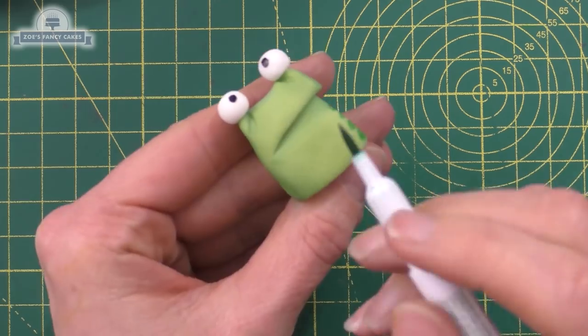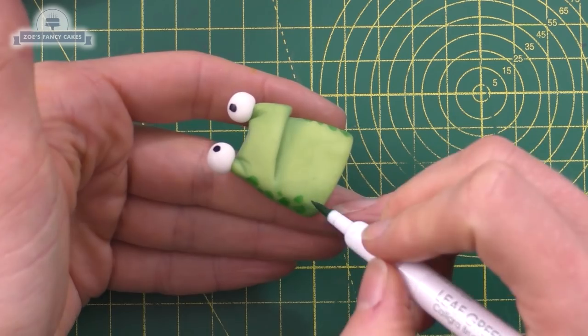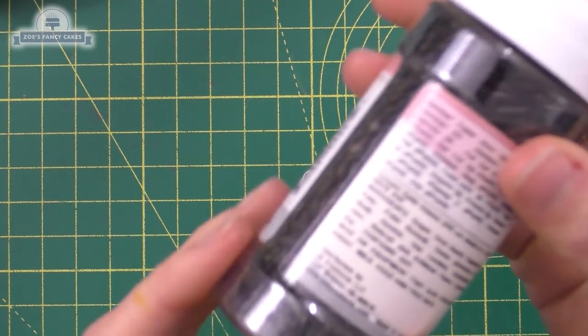Then we're going to paint some darker spots, or in this case I'm going to draw some darker spots with my edible pen. You can paint with food colours if you prefer. The edible pen just made things a little bit quicker and easier for me.